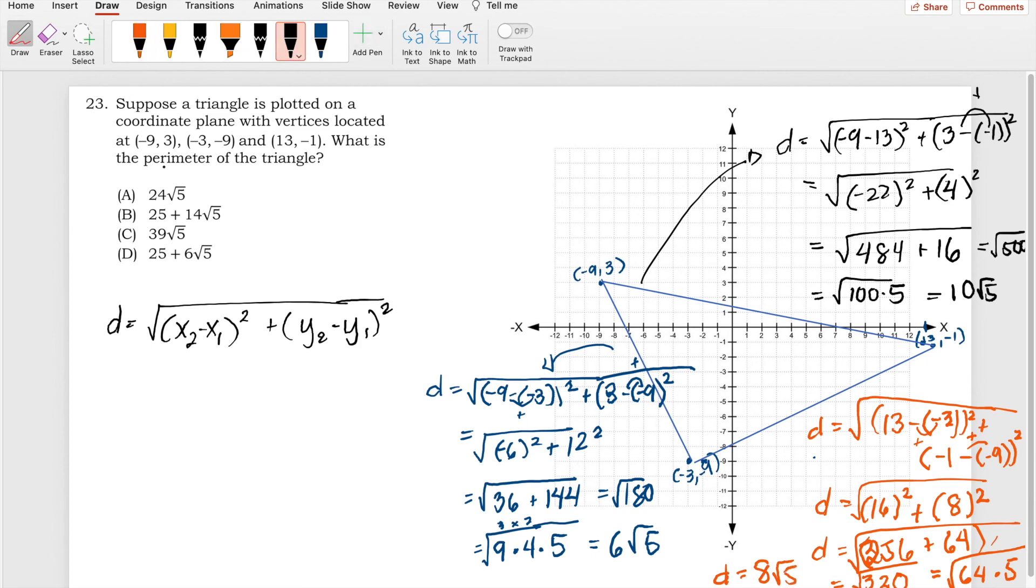Now, we are asked for the perimeter. Perimeter is adding all the sides, so we just add all the values of the sides. 10√5, the 6√5, and lastly, the 8√5. And if you add that, you will have letter A, and that is 24√5. Letter A.